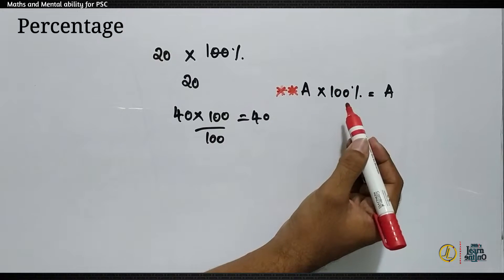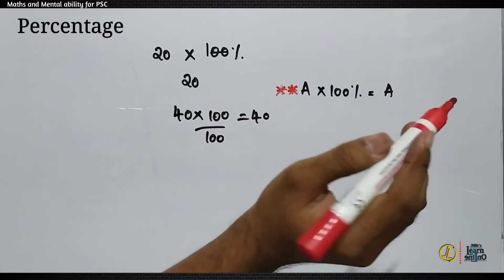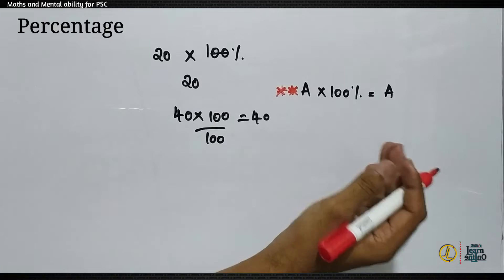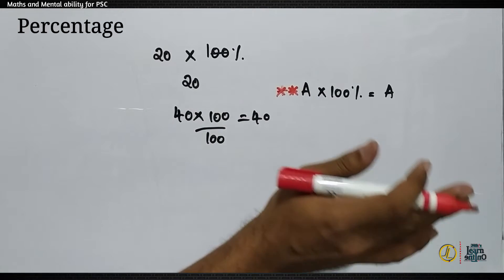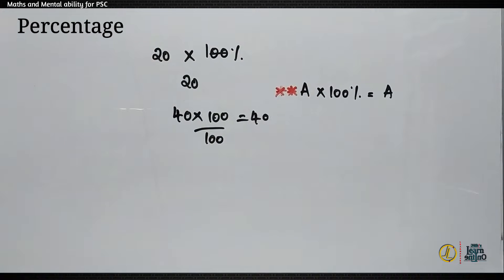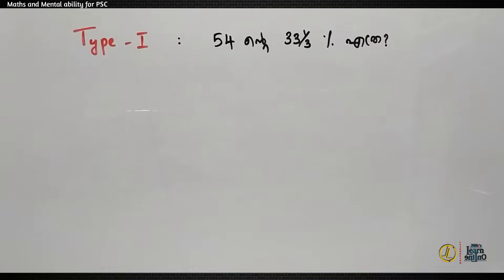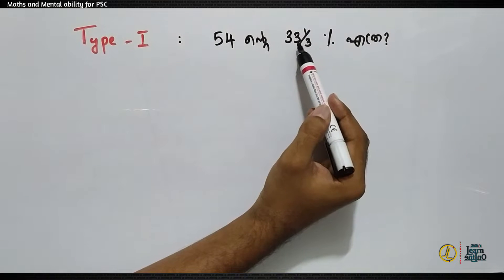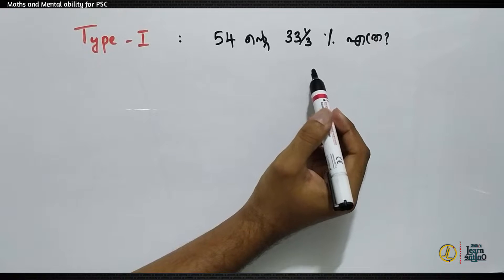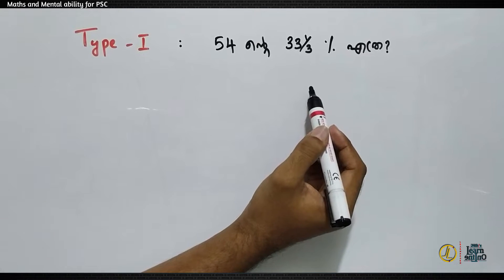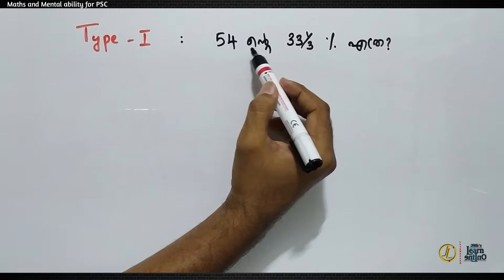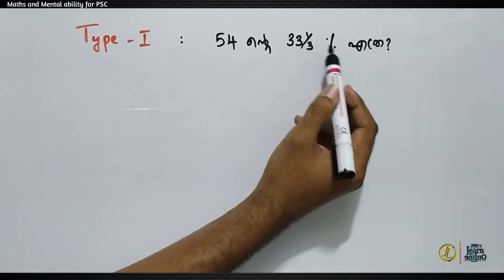If you have a number of 100, that number is 5. 25 is 100 — 25. 48 is 100 — 48. We will try that concept. We will discuss this in the first type. The first type is: 54 is 33 by 3. I will say that you can't do it directly. That is the same — 54 is 33 by 3.